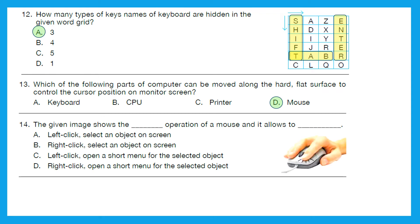Question 14: The given image shows the dash operation of a mouse and it allows to dash. Now here you can see that someone is clicking the left key of mouse. So we are performing the left click, and with left click what happens? We select an object on screen. Option A is the right answer.